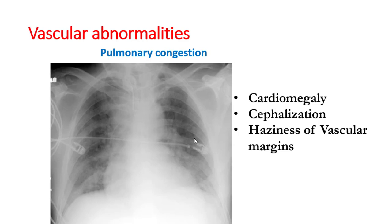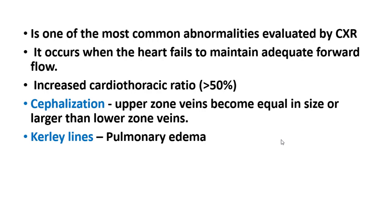In pulmonary edema on chest X-ray, findings include cardiomegaly, cephalization, and haziness of the vascular margins. This occurs when the heart fails to maintain adequate forward flow. The cardiac diameter increases more than 50 percent, and cephalization means upper zone veins become equal in size or larger than lower zone veins.